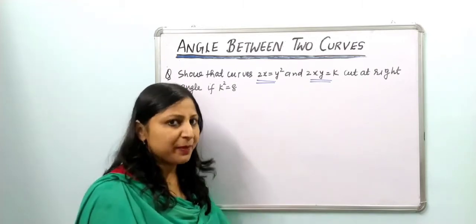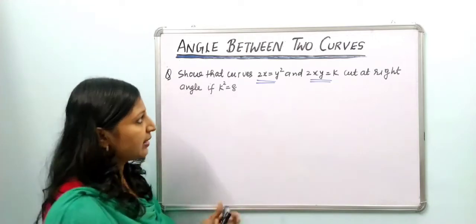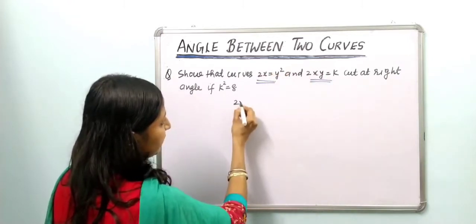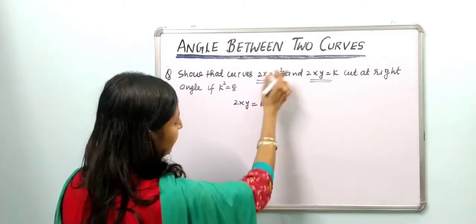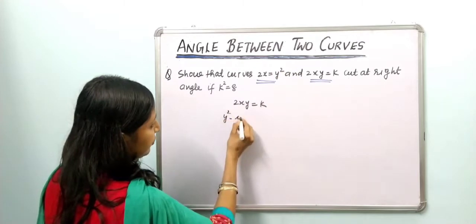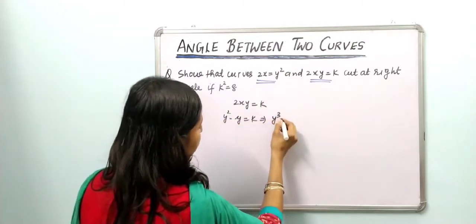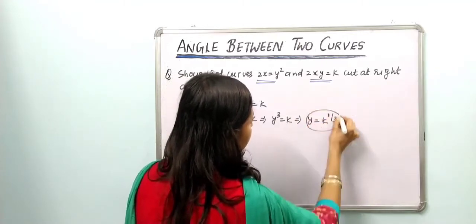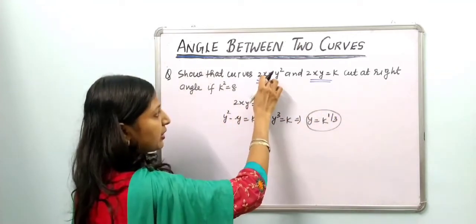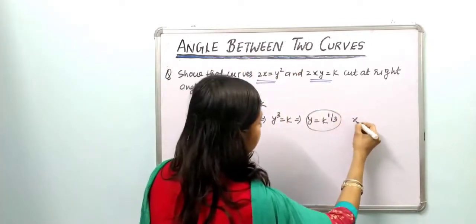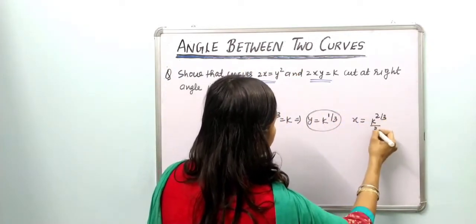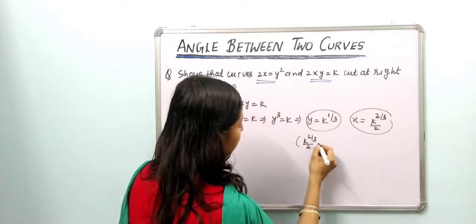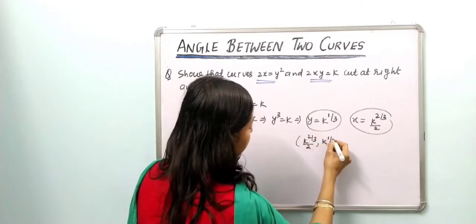First, we find the point of intersection. Substituting 2x = y² into 2xy = k gives y² · y = k, so y³ = k, which means y = k^(1/3). Putting this back into the first equation gives x = k^(2/3) / 2. So the point of intersection is (k^(2/3)/2, k^(1/3)).